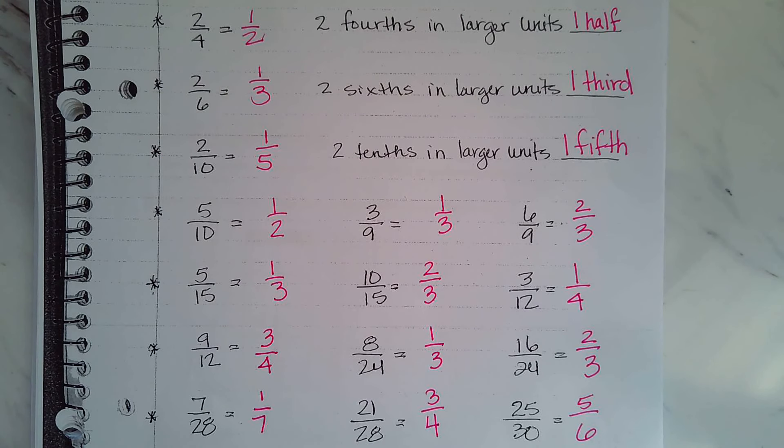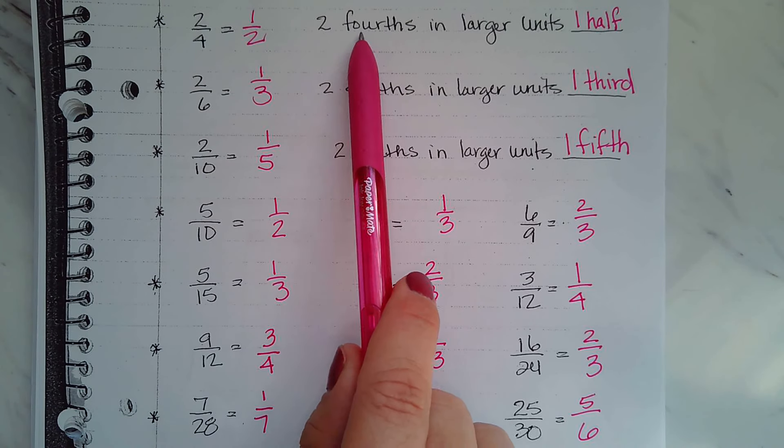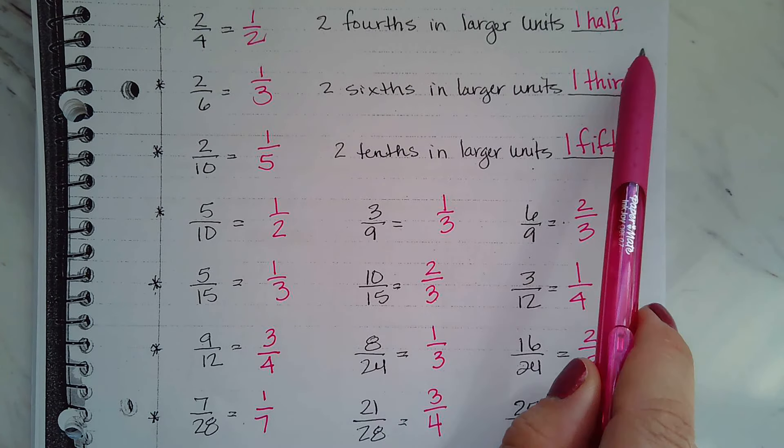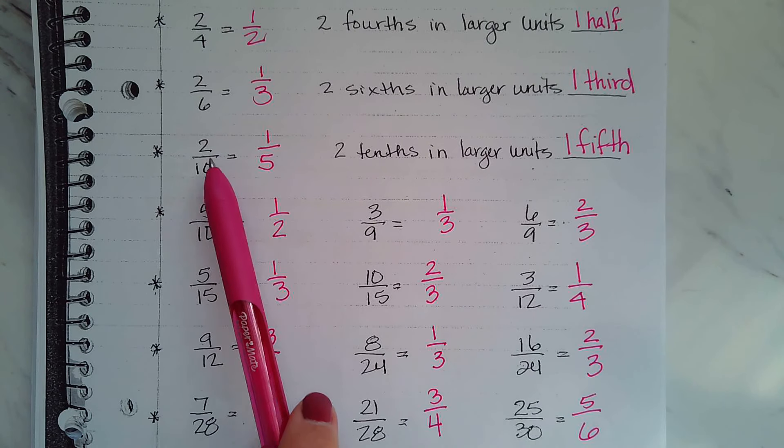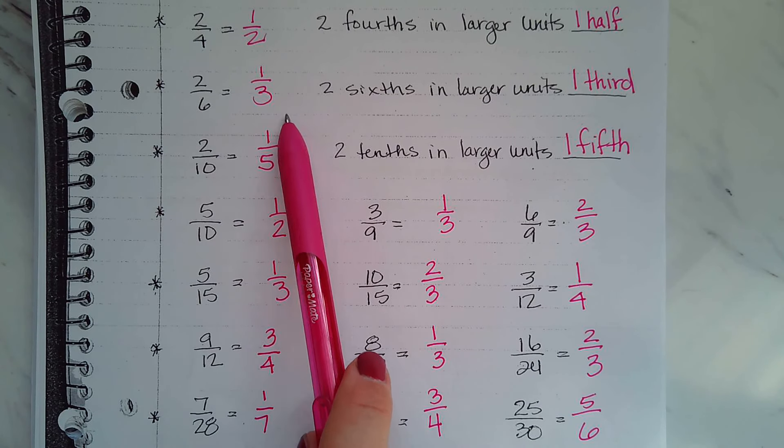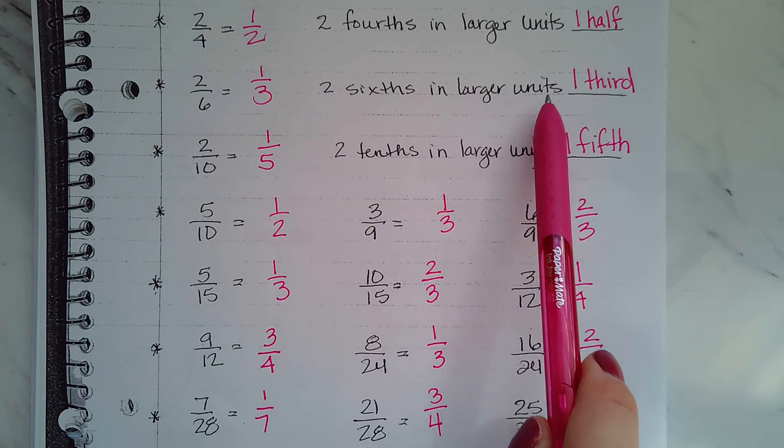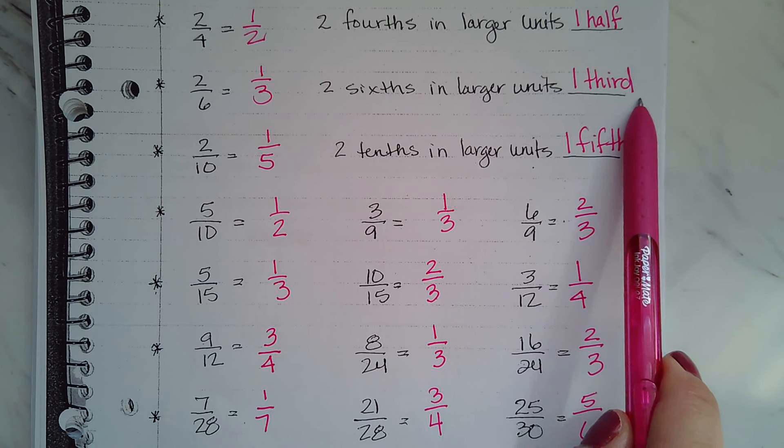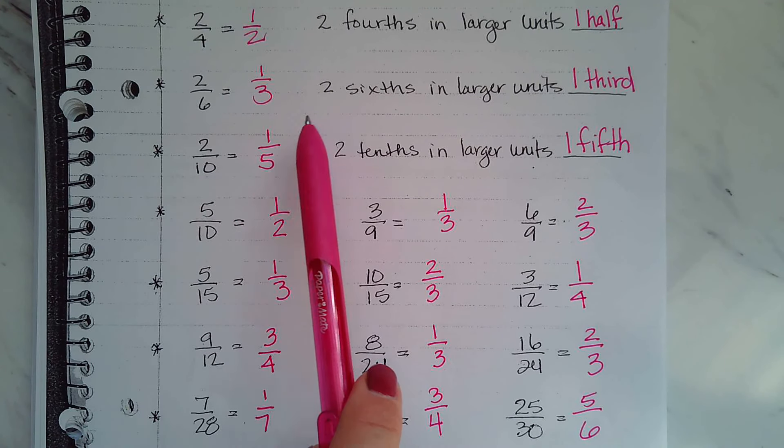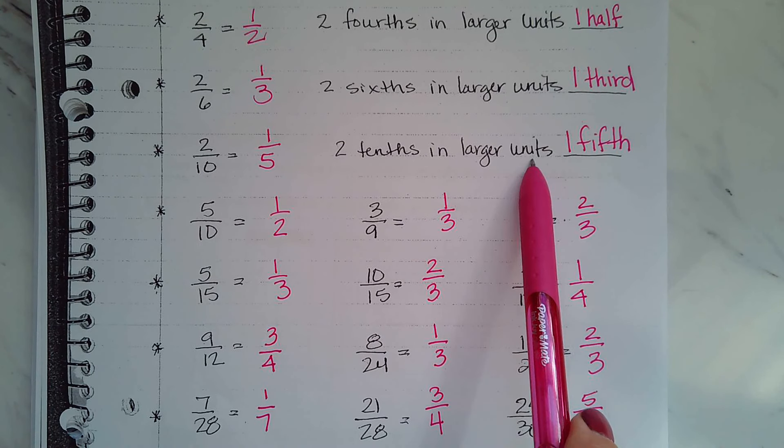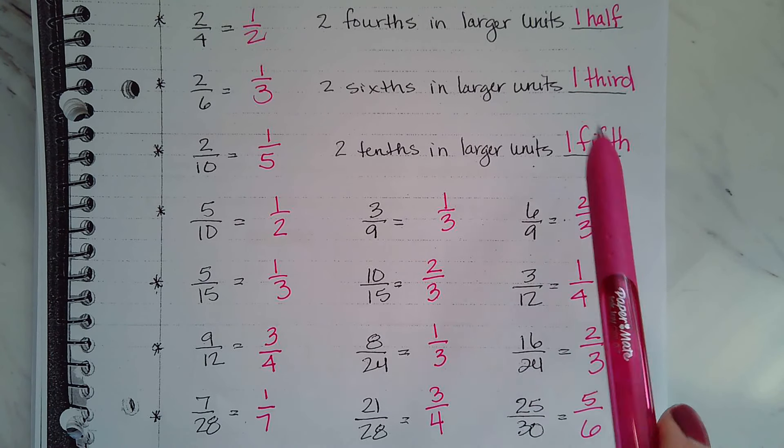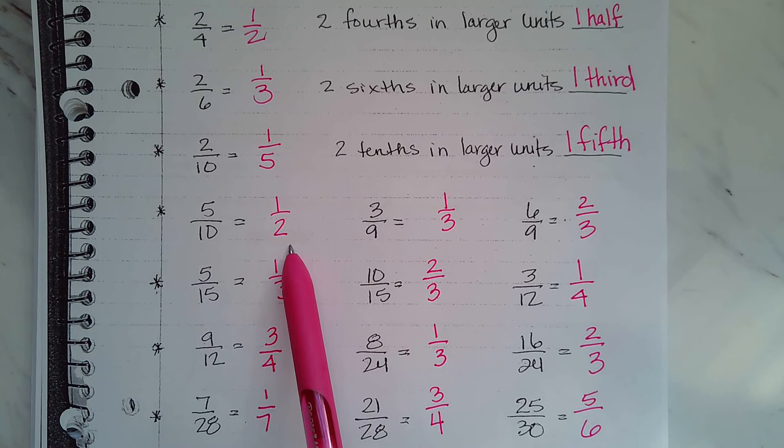Alright, so let's check your work. So one-half is the same as two-fourths in larger units is one-half. Two-sixths is really one-third, so two-sixths in larger units is one-third. Two-tenths is one-fifth, so two-tenths in larger units is one-fifth.